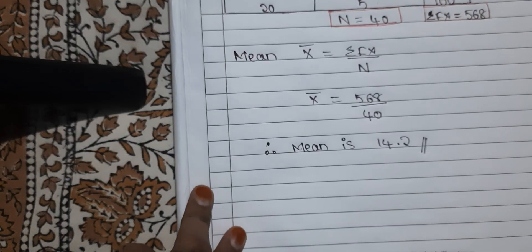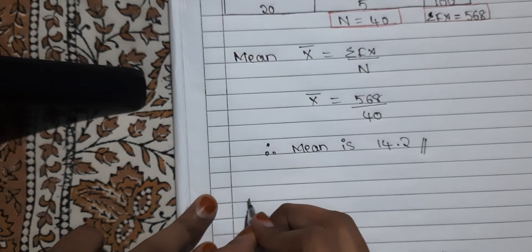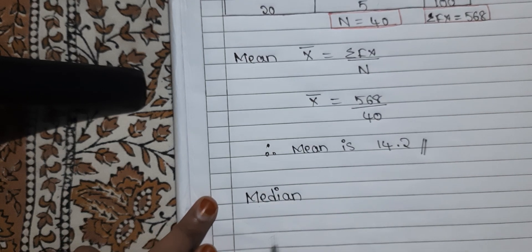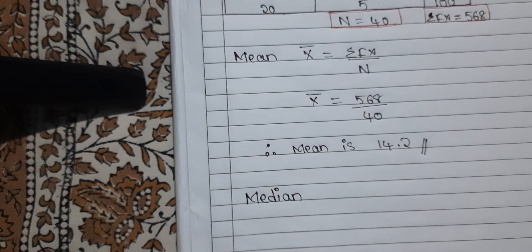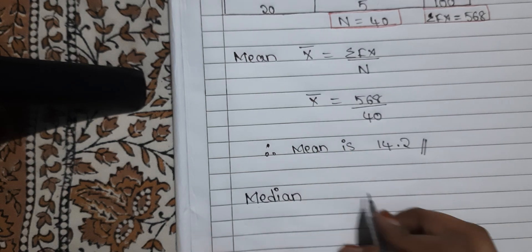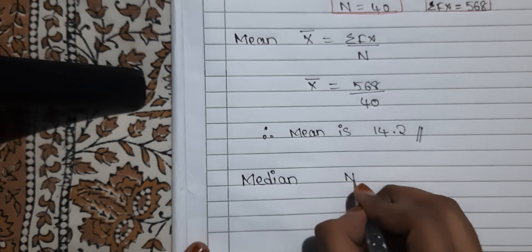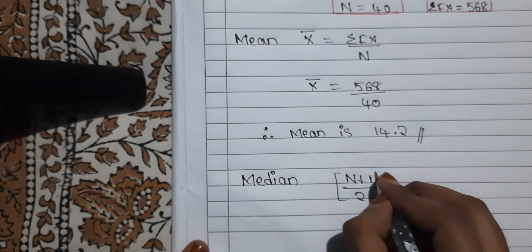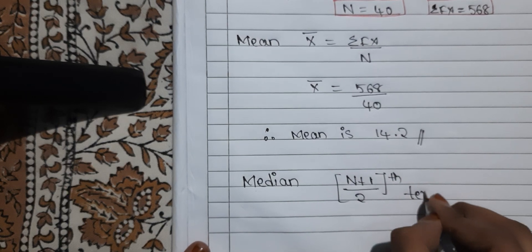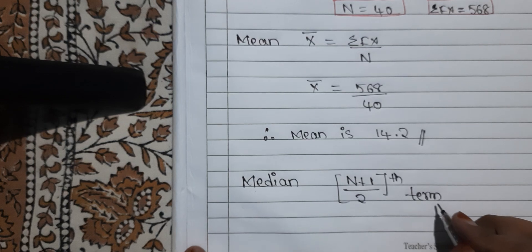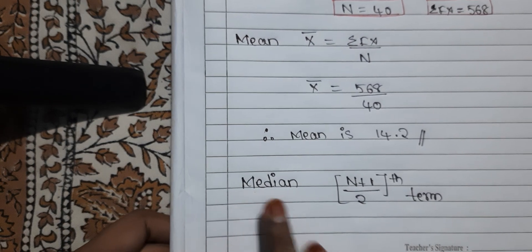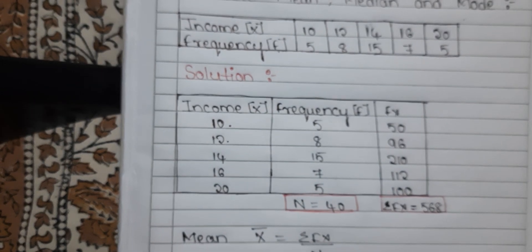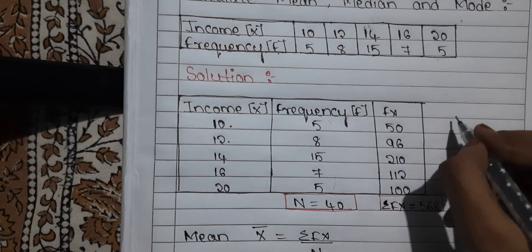We have calculated the mean. Now let us go with the median. The formula of median is the (N + 1) / 2 th term, also called item. To find median, we first need to know cumulative frequency.